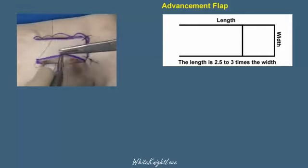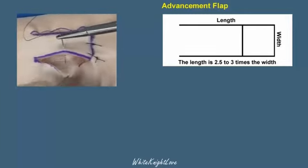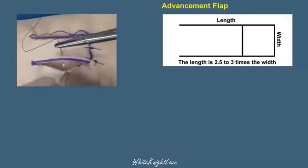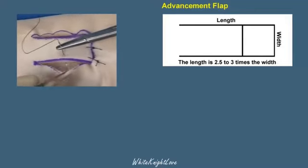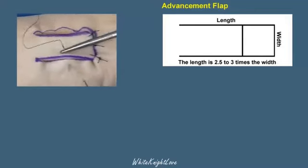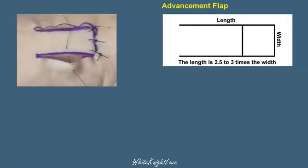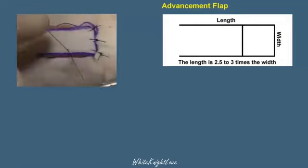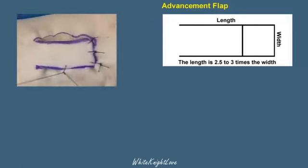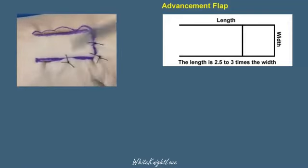And now we have a problem of unequal skin edge length. The skin edge is longer than the flap edge. We will then close this with the principles of halving. The first or central suture is placed in the middle of the inferior edge of the flap and in the middle of the corresponding skin flap.